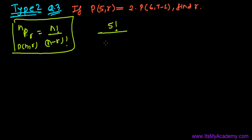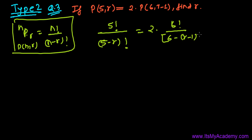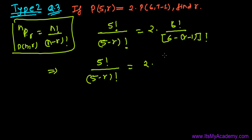So the left side becomes 5 factorial divided by (5 minus R) factorial. Similarly, the right side is 2 times 6 factorial divided by (6 minus R minus 1) factorial. Now, 6 factorial can be written as 6 times 5 factorial. Also note that 6 minus R minus 1 — the double negative gives us a plus.